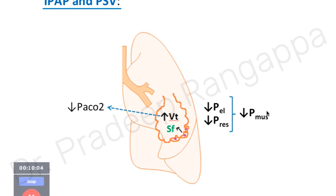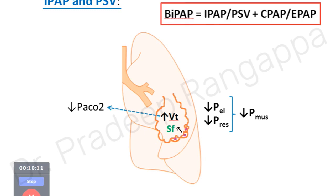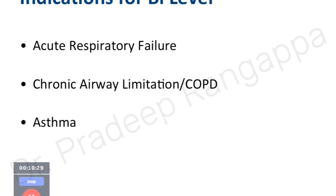Increasing tidal volume reduces CO2 and facilitates surfactant production by alveolar cells. This reduces two types of pressure: elastance pressure and resistive pressure, and together reduces the respiratory effort — so work of breathing is reduced. When talking about BiPAP or bi-level positive airway pressure, it simply means providing IPAP at one level and EPAP at another, or pressure support plus CPAP. These are different combinations used in various types of respiratory failure.